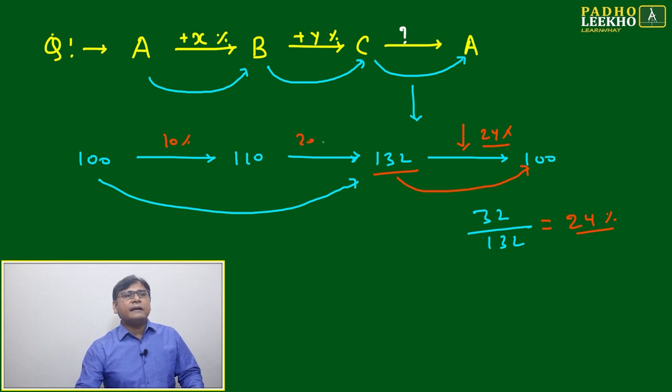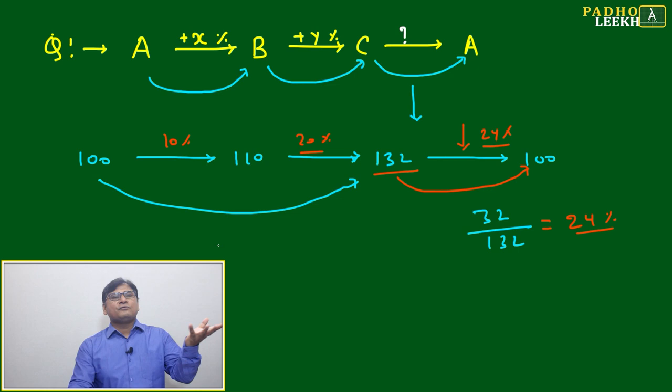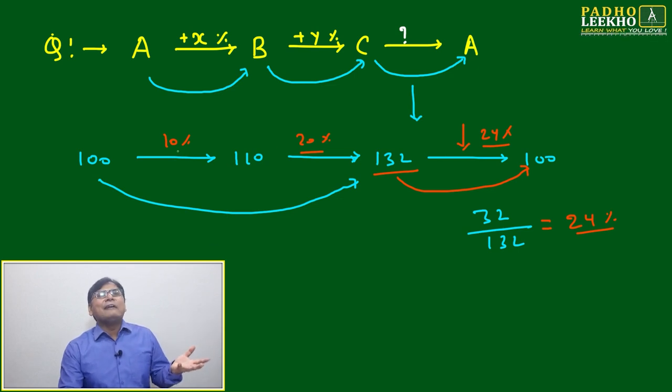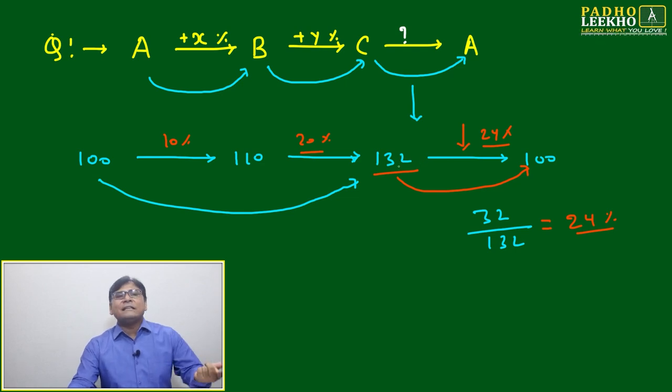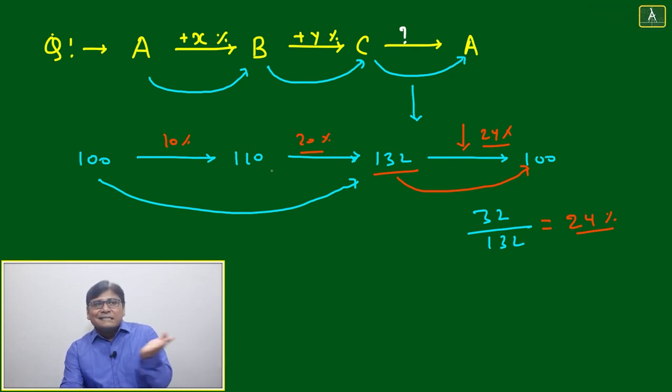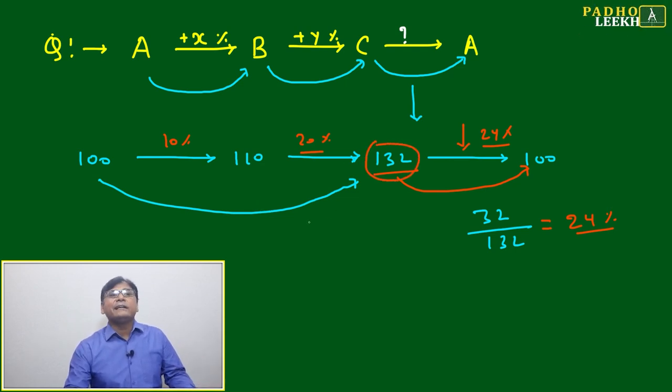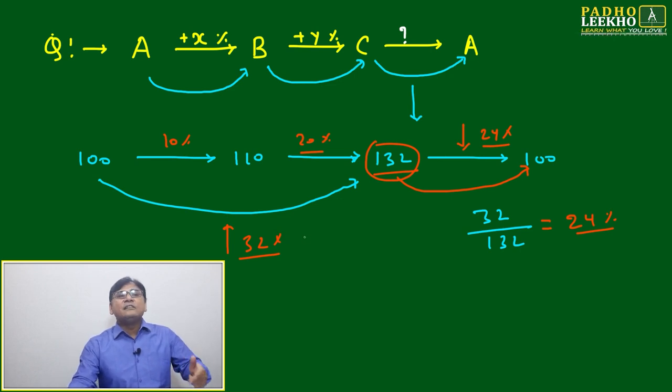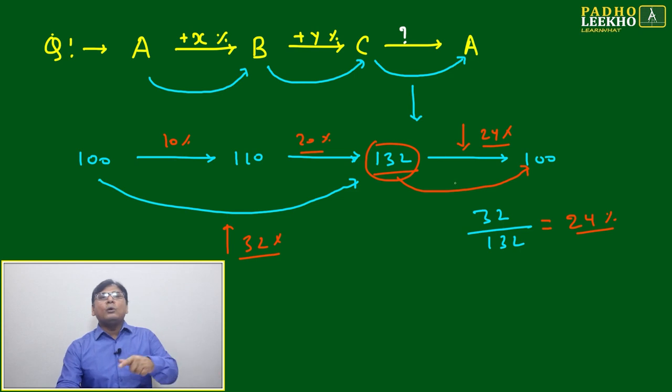What is 24? We will be able to calculate in terms of 10 and 20. You will not be able to calculate exactly in terms of x and y, because if you are adding x and y it will become 30 percent. Actual change will be more than 30 because it is becoming successive change. Net change will become more than 30 percent. Due to this we are getting 132, net change is 32 percent, not 30 percent.